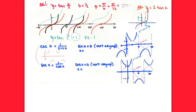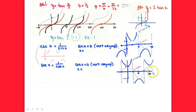Secant and cosecant both look like a series of smiley faces and frowny faces, with a gap — no values between negative 1 and positive 1 — in the neutral zone. For cosecant you've got smiley face, frowny face, with a hole between negative 1 and positive 1. Same thing for secant. They look the same in shape but have asymptotes in different places: cosecant has asymptotes at multiples of π, secant has asymptotes at negative π/2, π/2, 3π/2 — odd multiples of π/2.